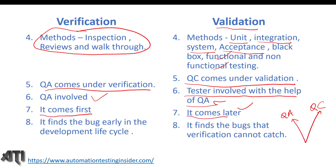Verification comes before validation. Verification finds bugs early in the development lifecycle — for example, if a requirement is ambiguous or doesn't match the customer's needs, defects can be raised early. Validation finds bugs that verification cannot catch — mostly functional and non-functional defects found during actual testing once we get the product. This is the key difference between verification and validation.